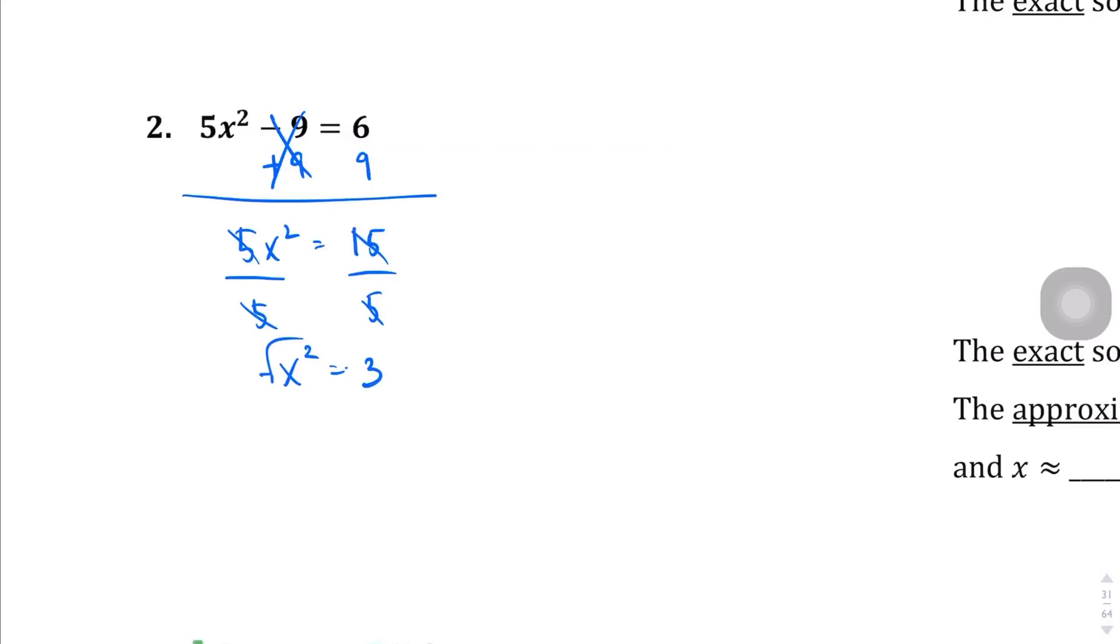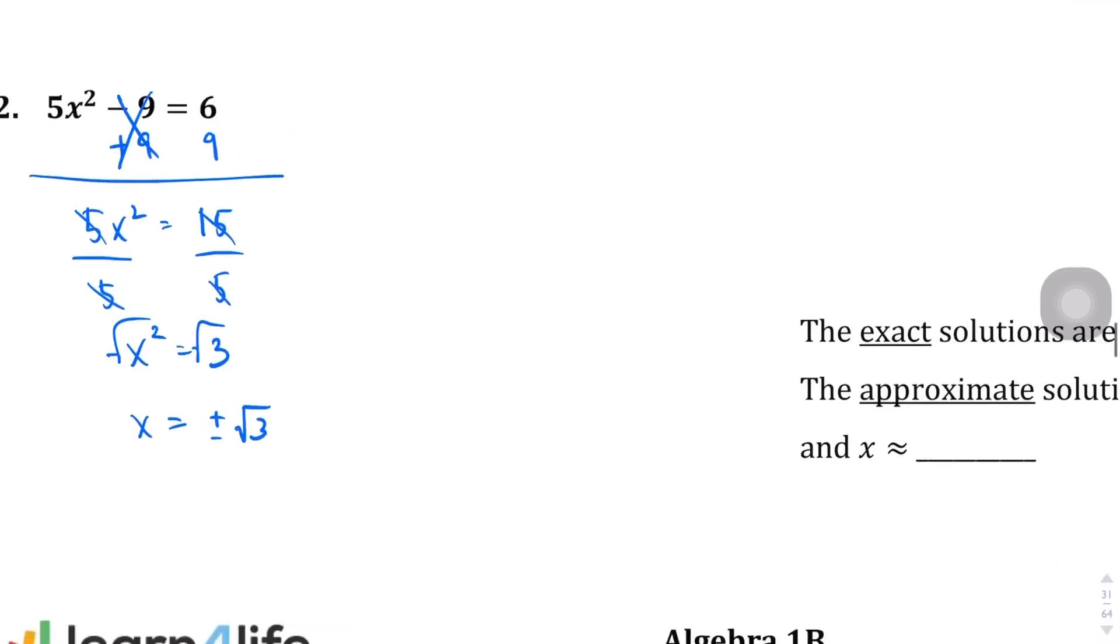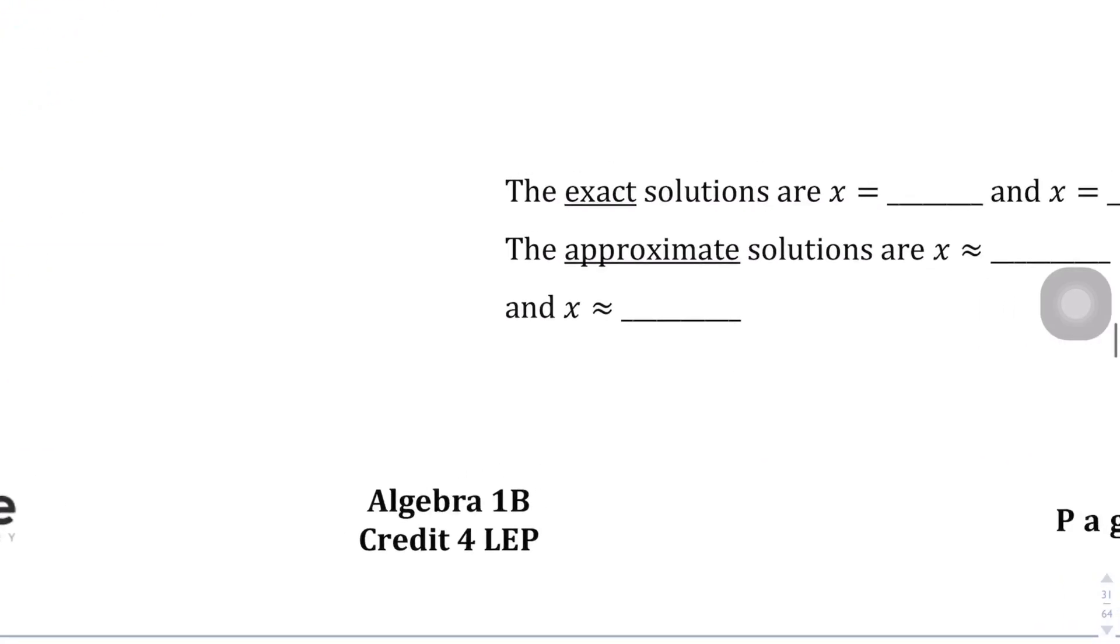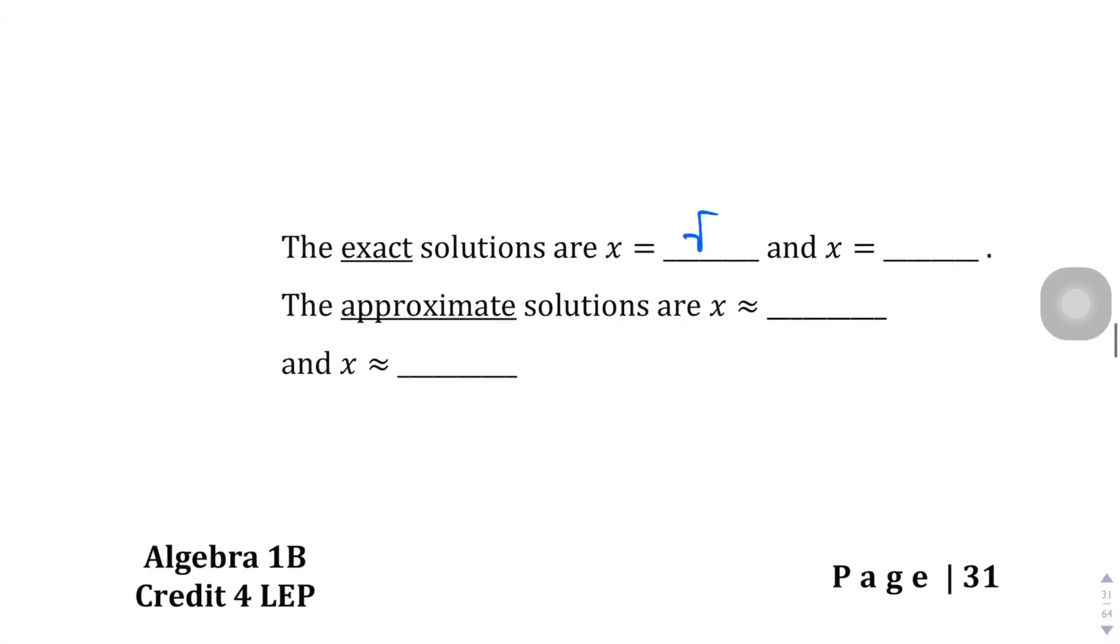Then square root both sides to get the root, which is ±√3. So the exact solutions are x = √3 and x = -√3. But if you punch it into the calculator, you would get an approximation of 1.73 and -1.73.